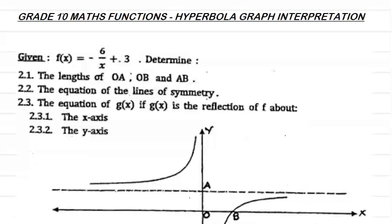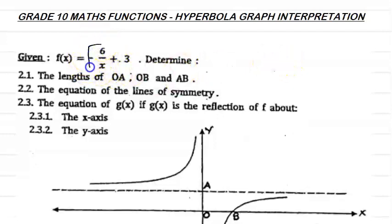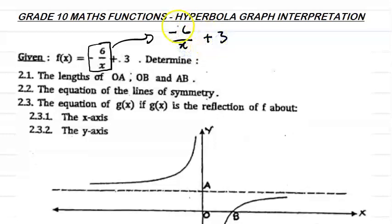So some basic theory about hyperbola. Given f(x) equals minus 6 over x plus 3 — so that's minus 6 over x plus 3. For a hyperbolic function, you see this is the same as saying minus 6 over x, and then the plus 3, I'll come to that now.